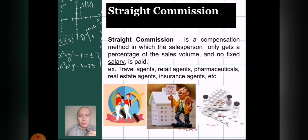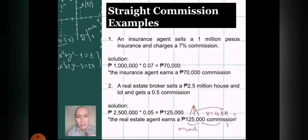For my case now, I'm working as a teacher but at the same time I am also a part-time insurance agent and that is straight commission. So I do not have a base salary with that insurance, I'm just earning from commissions. So that's how straight commission works.